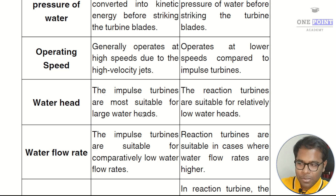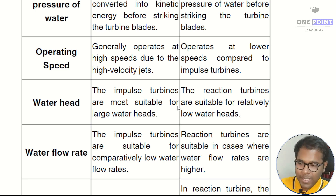The next difference is based on water head. Impulse turbines are most suitable for large water heads, and reaction turbines are suitable for relatively low water heads.